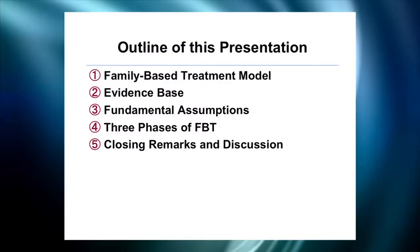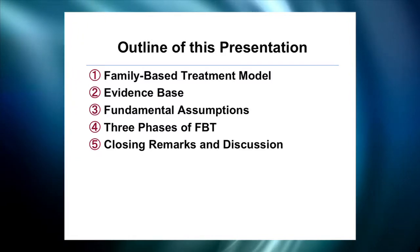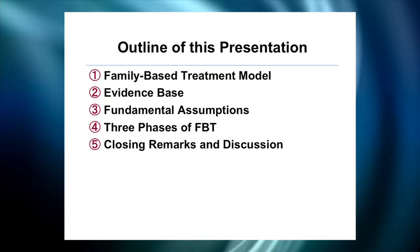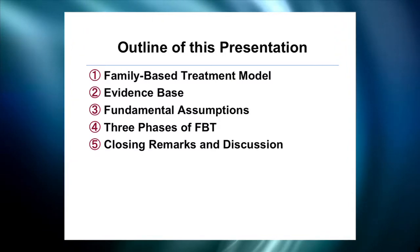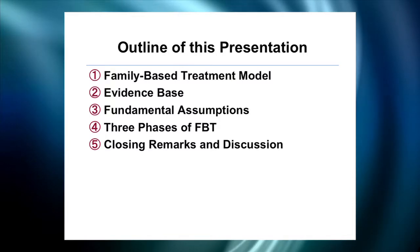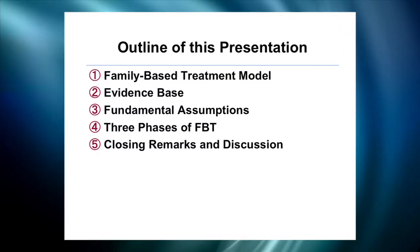Jim Locke and I will be spending the next four hours giving you an introductory workshop to family-based treatment for adolescents with anorexia nervosa. We will divide the presentation into five sections: the background of the family-based treatment model, a brief review of the evidence, the fundamental assumptions of this treatment approach, a detailed look at the three phases of treatment, and we will close with Q&A and discussion of training opportunities.